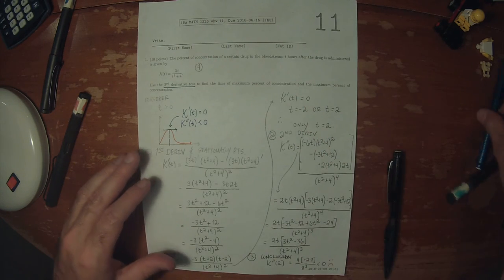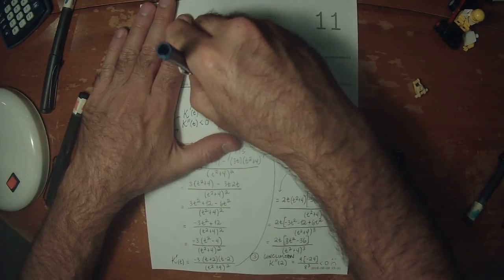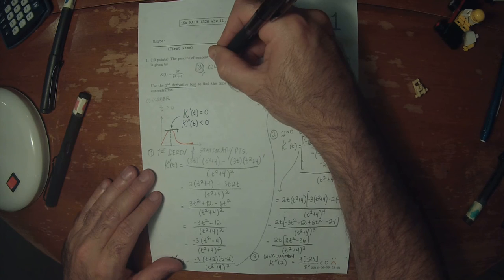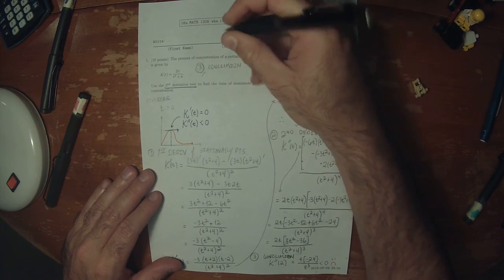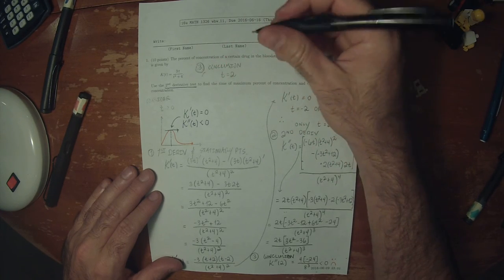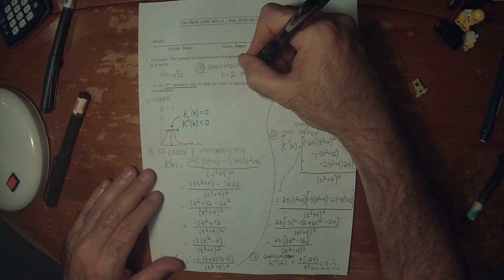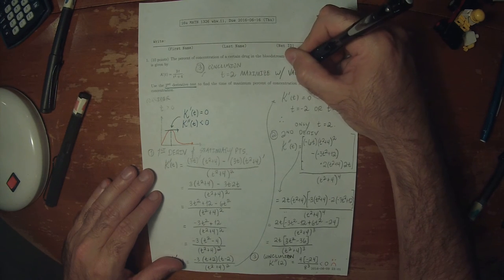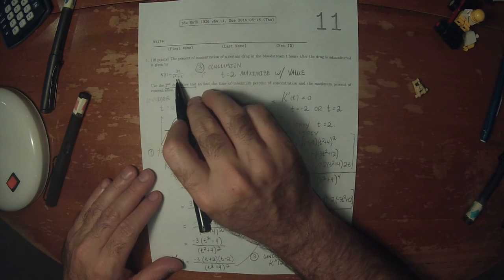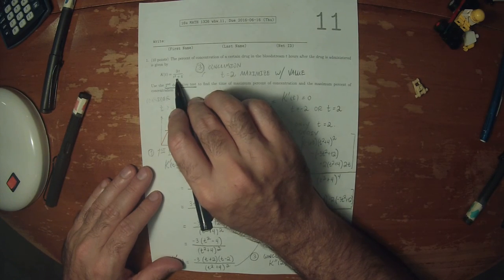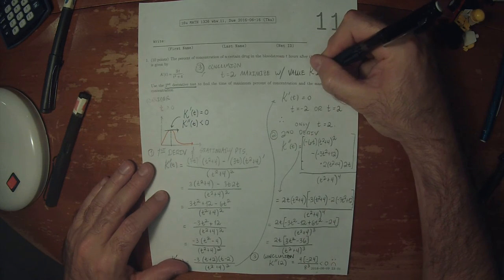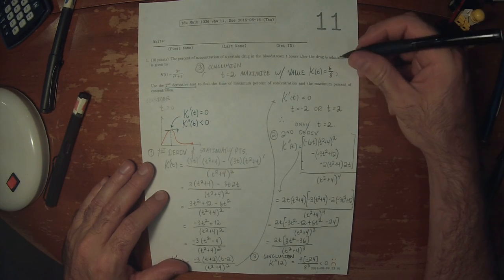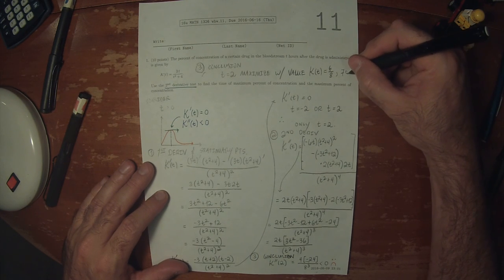So the conclusion is that t equals 2 is the maximizer. If you plug in 2, that would be 6 over 8, which is to say 3 over 4, so 75 percent.